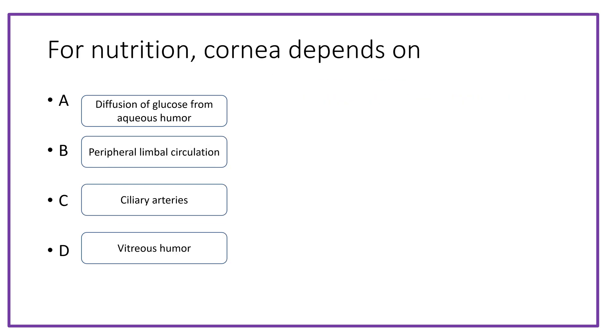Third question: for nutrition, the cornea depends on which of the following? Options are diffusion of glucose from aqueous humor, peripheral limbal circulation, ciliary arteries, or vitreous humor.